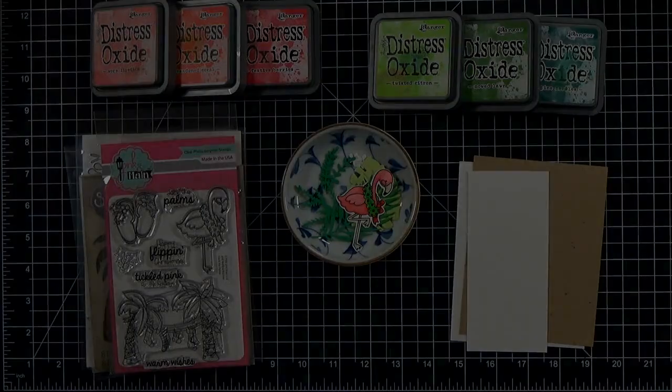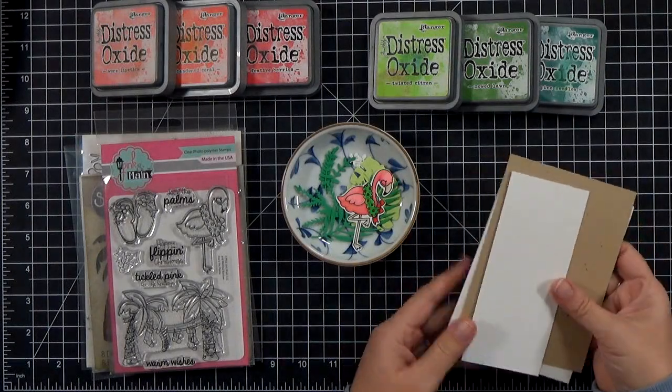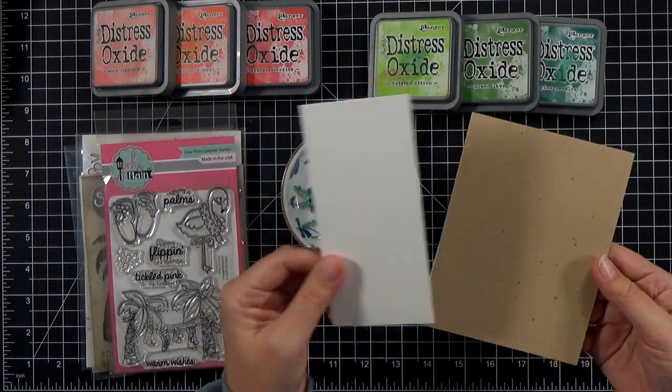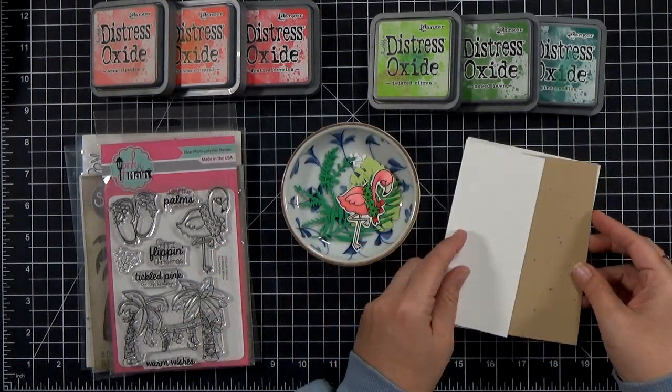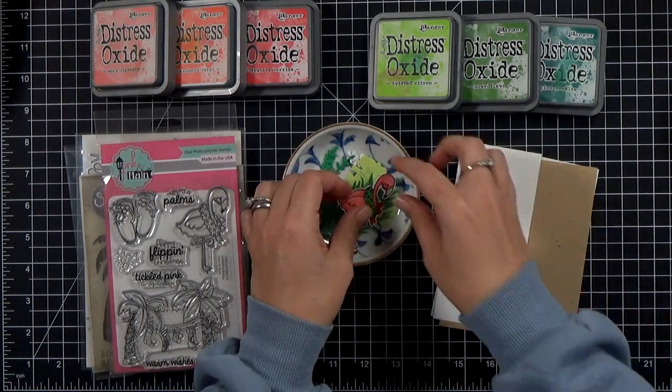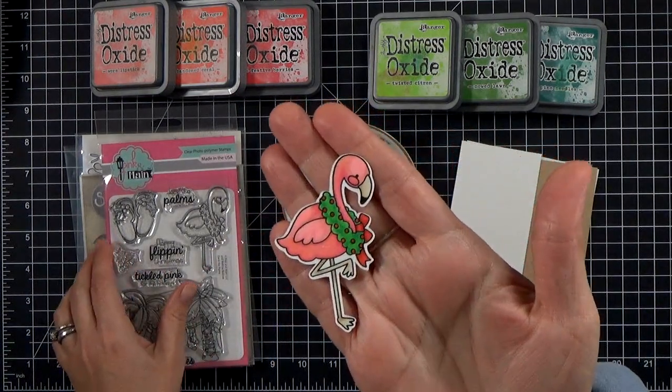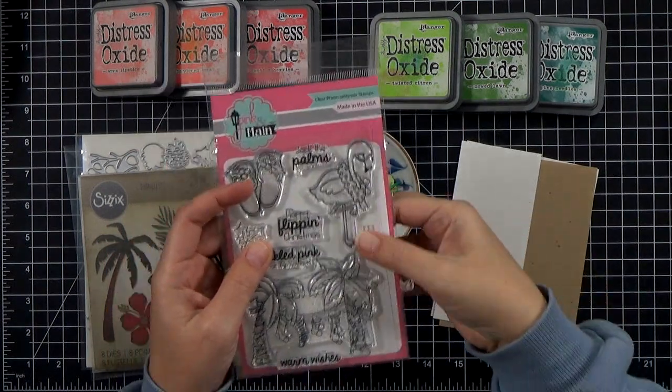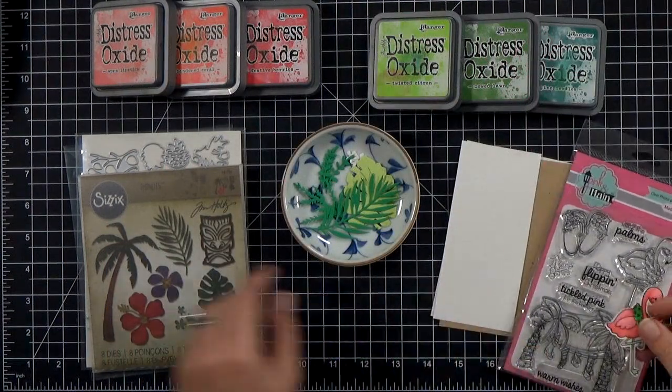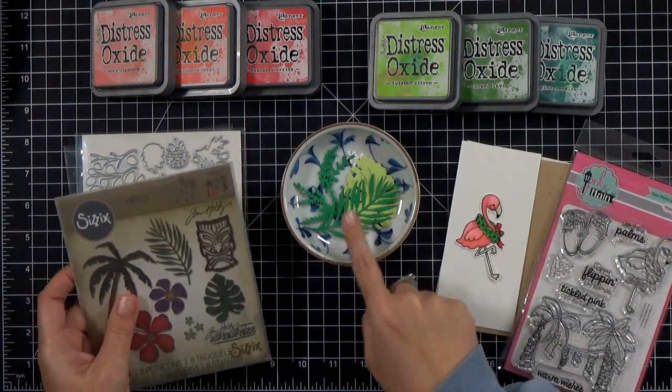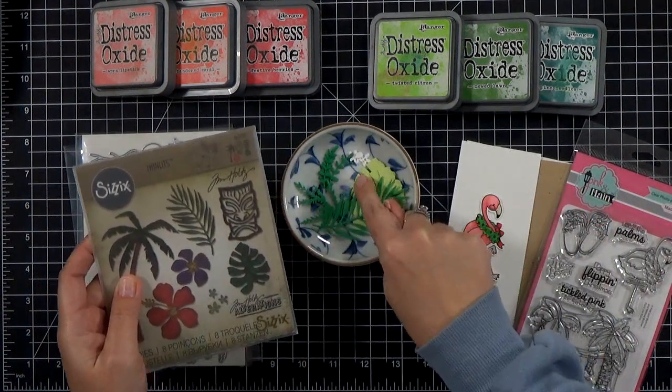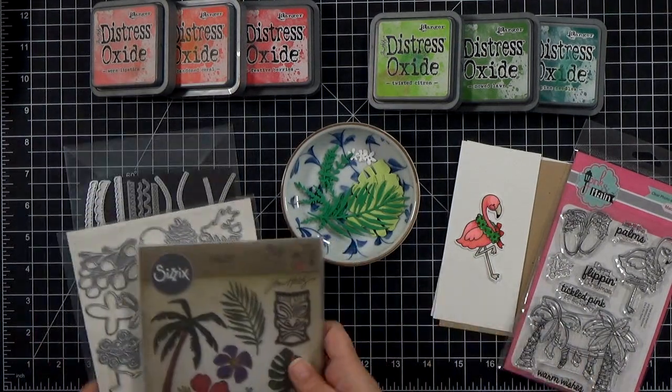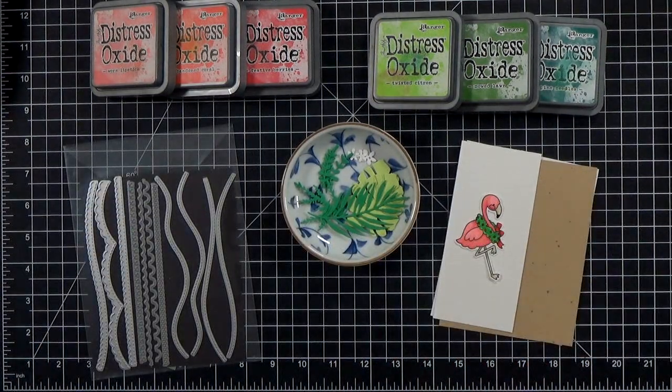I love working with sketches because they're a great way to inspire you when you're not sure what to do. For my card, I started out with a white card base and then I've got a piece of craft card stock cut to an A2 size and a piece of white card stock as well. I've got this cute little flamingo from this Pink and Mane set. I'm going to use the Warm Wishes to create my own patterned paper and then I've already gone ahead and die cut some leaves and flowers from two Tim Holtz sets.